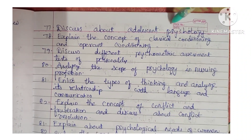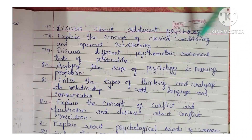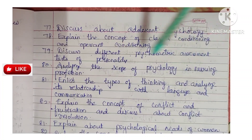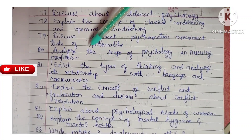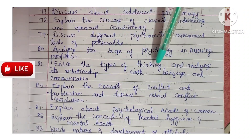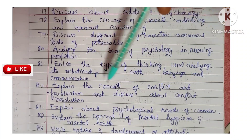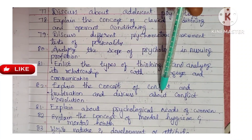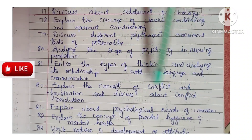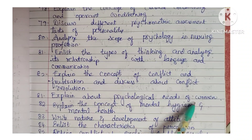Next: discuss about adolescent psychology. Next: explain the concept of classical conditioning and operant conditioning. Next: discuss different psychometric assessment tests and personality. Next: analyze the scope of psychology in the nursing profession. Next: enlist the types of thinking and analyze its relationship with language and communication. Next: explain the concept of conflict and frustration and discuss conflict resolution. Next: explain the psychological needs of women.